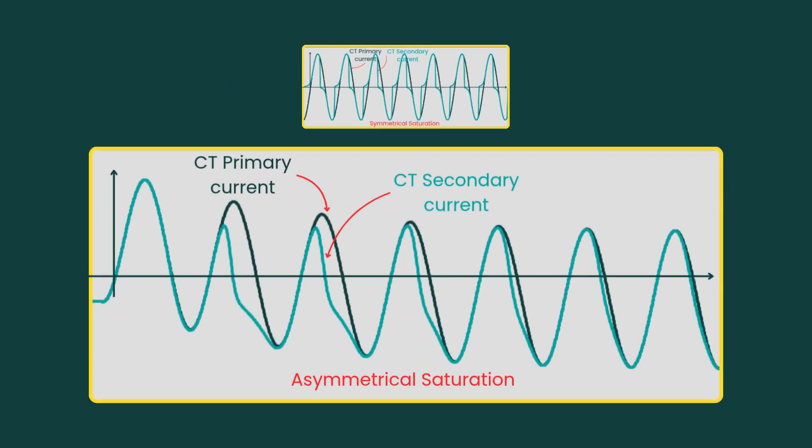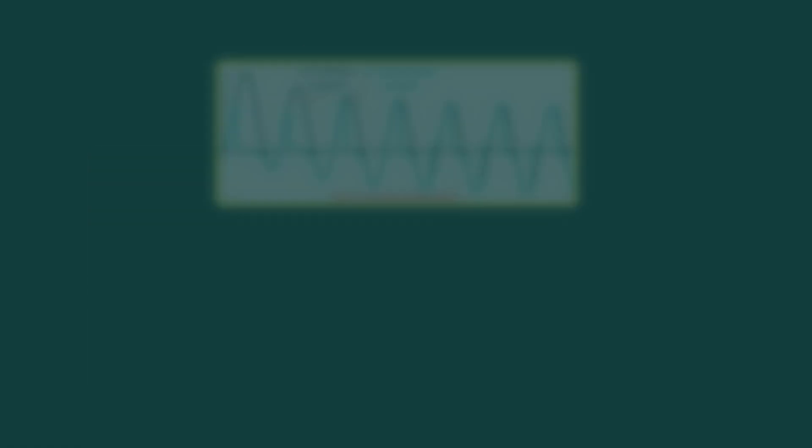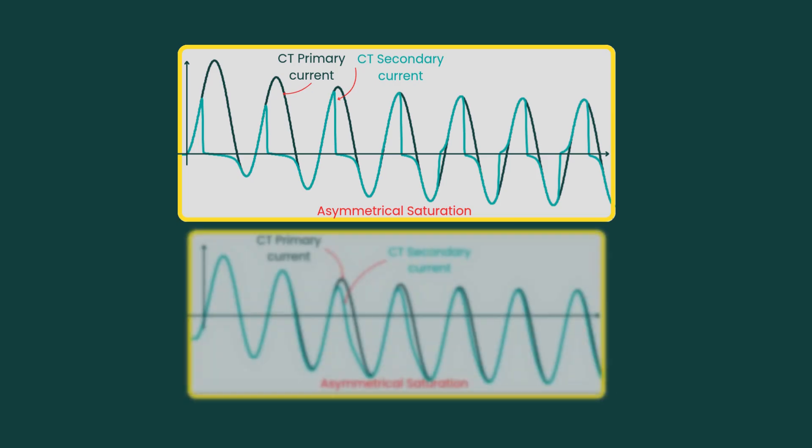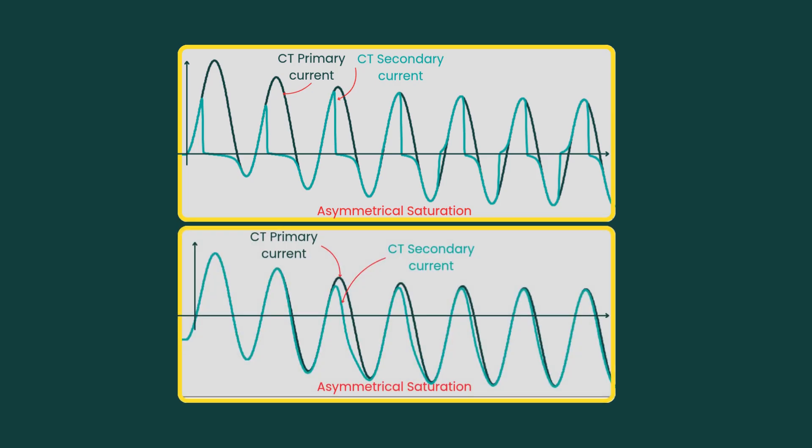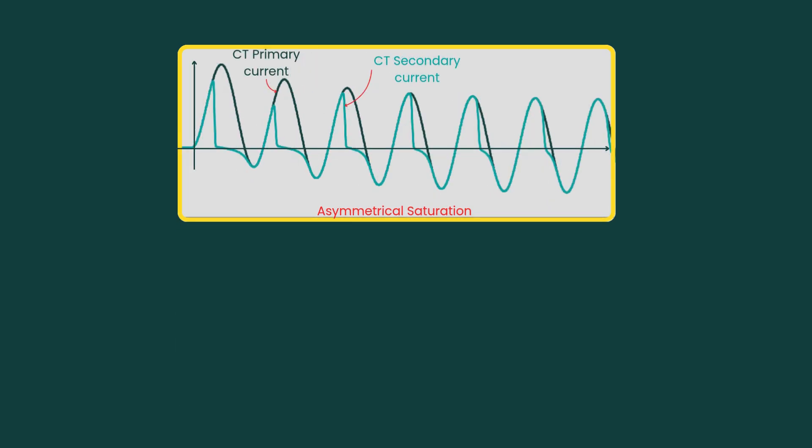Asymmetrical saturation is different. It happens because of DC offset in the current. Depending on the fault current, DC offset, and the system's X by R ratio, the CT might saturate immediately or after a few cycles, and saturate in one direction only or in both directions.